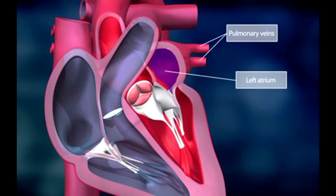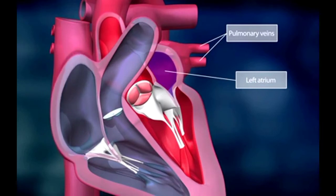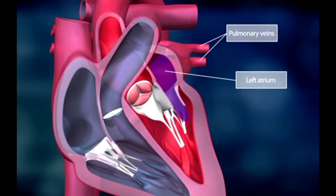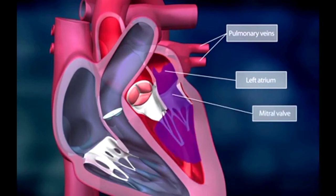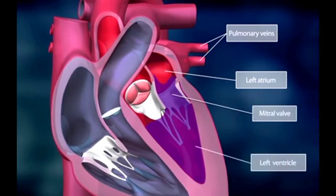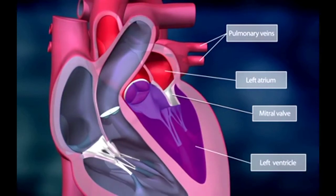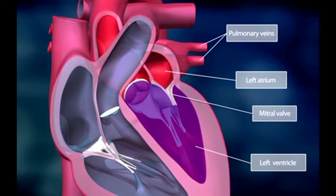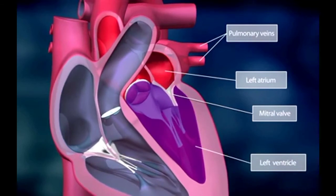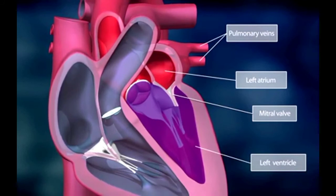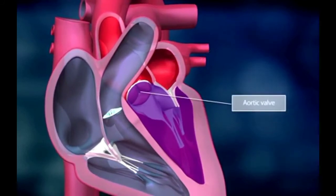Oxygen-enriched blood returns from the lungs through the pulmonary veins and fills the heart's left atrium. The left atrium contracts, the mitral valve opens, and the blood is pumped into the left ventricle. When the left ventricle is filled with blood, the mitral valve closes to prevent the back flow of blood into the left atrium.